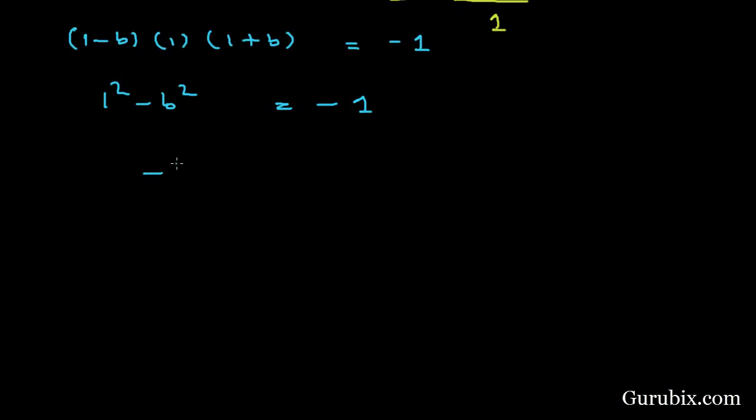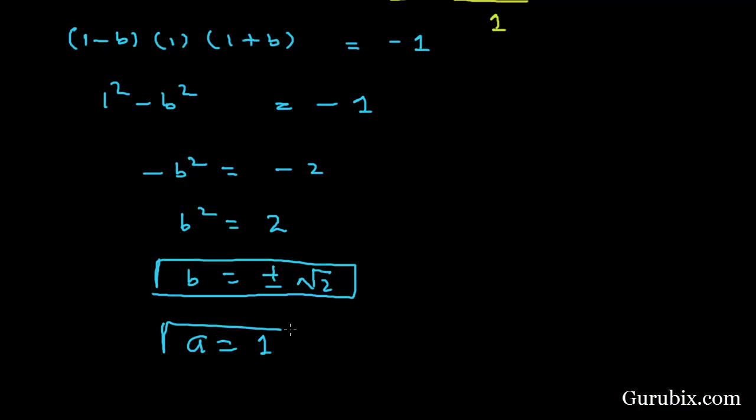Therefore, -b² = -2, so b² = 2, and therefore b = ±√2. So this is the value of b, and a = 1. This is the solution of the question. Thank you.